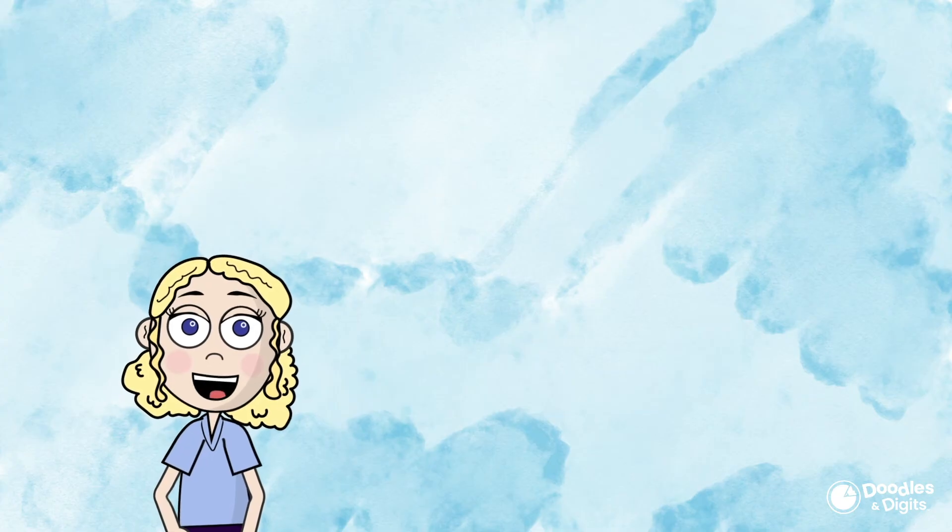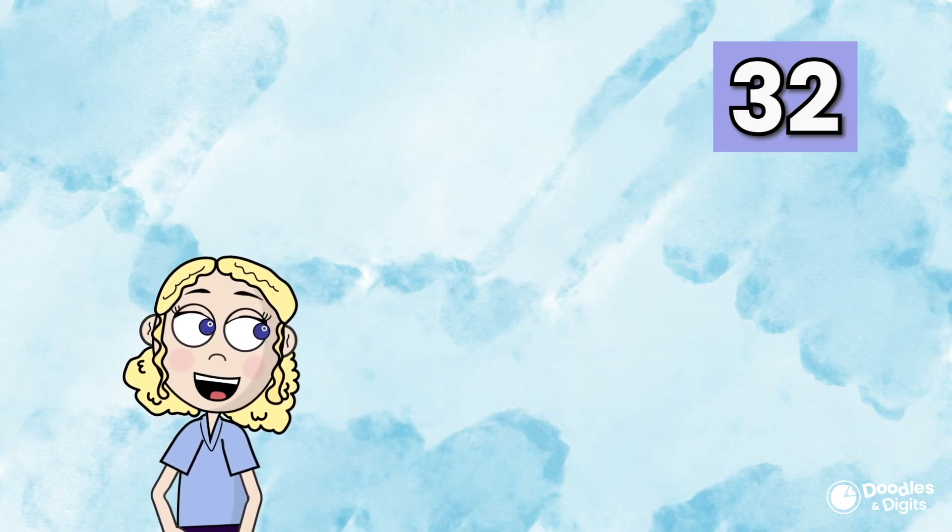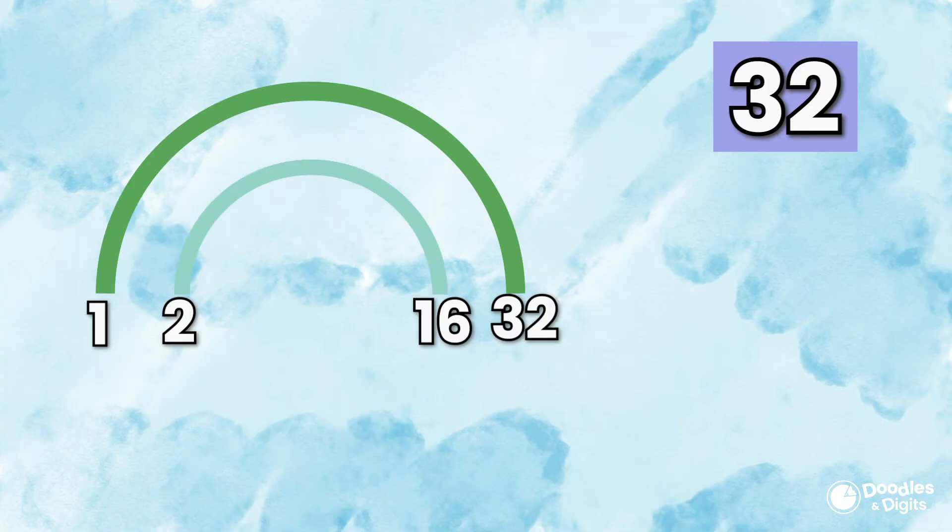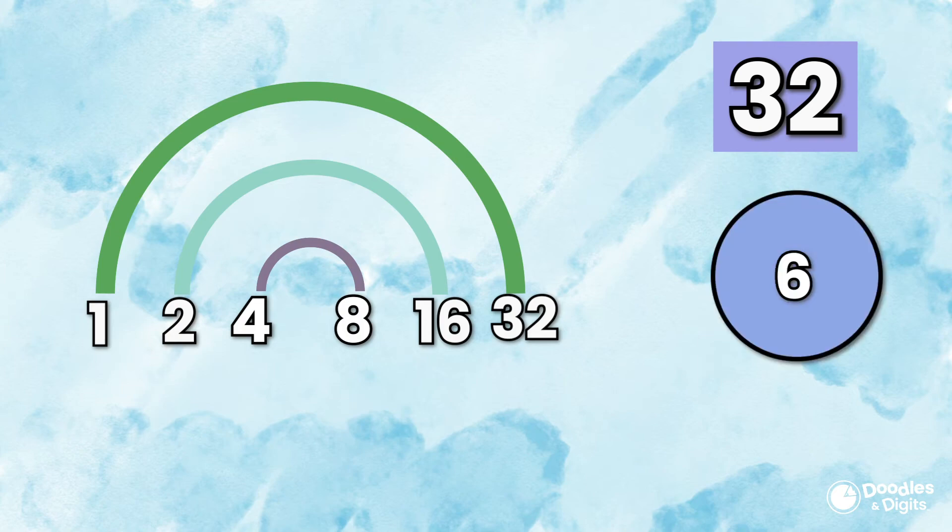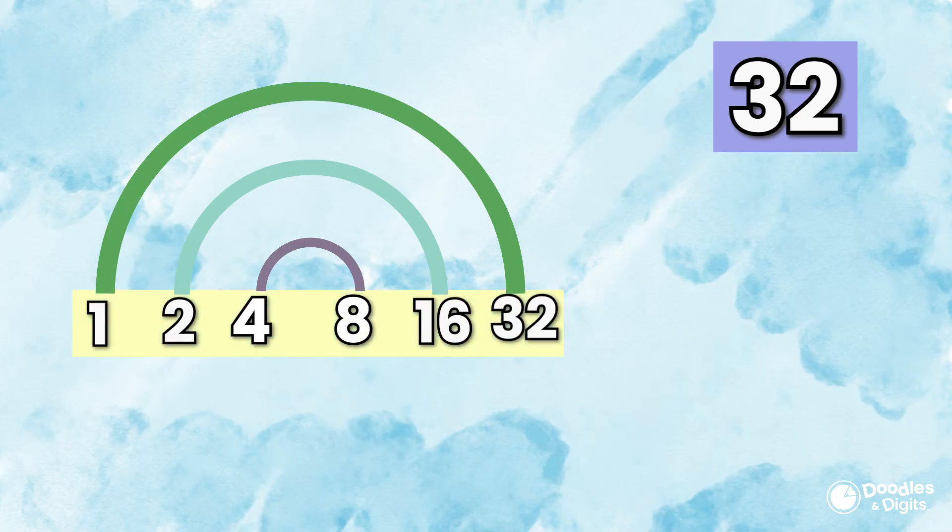Now that I showed you how to find factors in a few different ways, let's try to find all the factors of 32 together. I'm going to use the rainbow technique. I'm going to start with 1. 1 times 32 equals 32. 2 times 16 equals 32. 3, it's not a factor. 4? Yes, 4 times 8 equals 32. Let's try 5. Not a factor. 6? Not a factor. 7? Also not a factor. So the factors of 32 are 1, 2, 4, 8, 16, and 32.